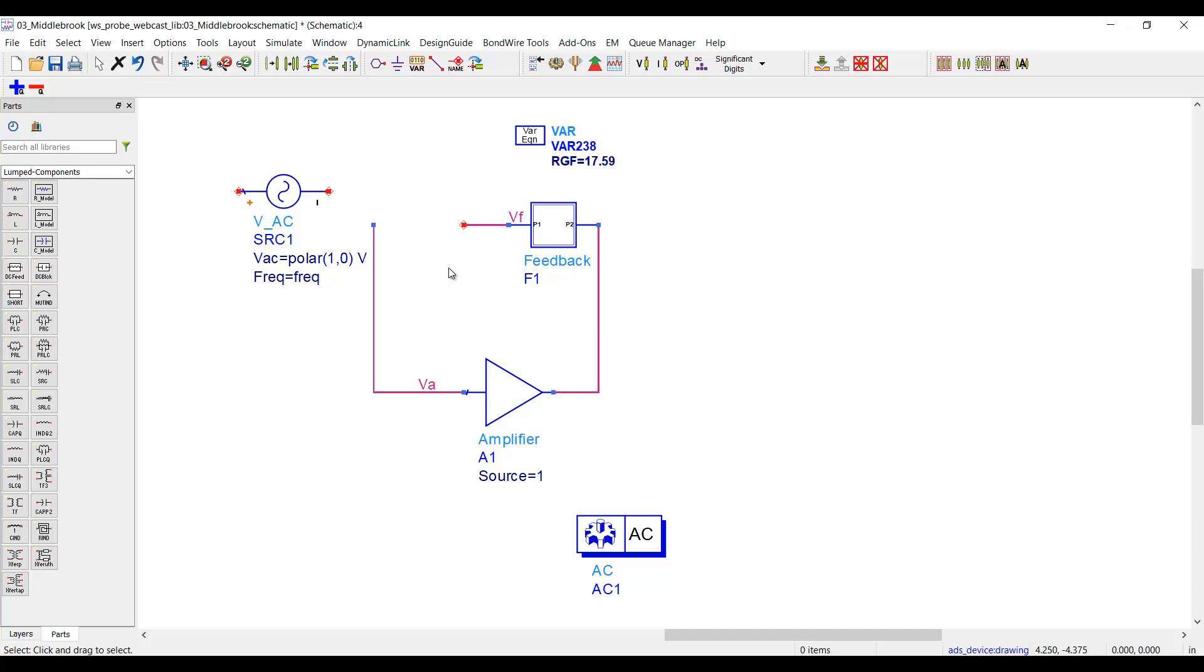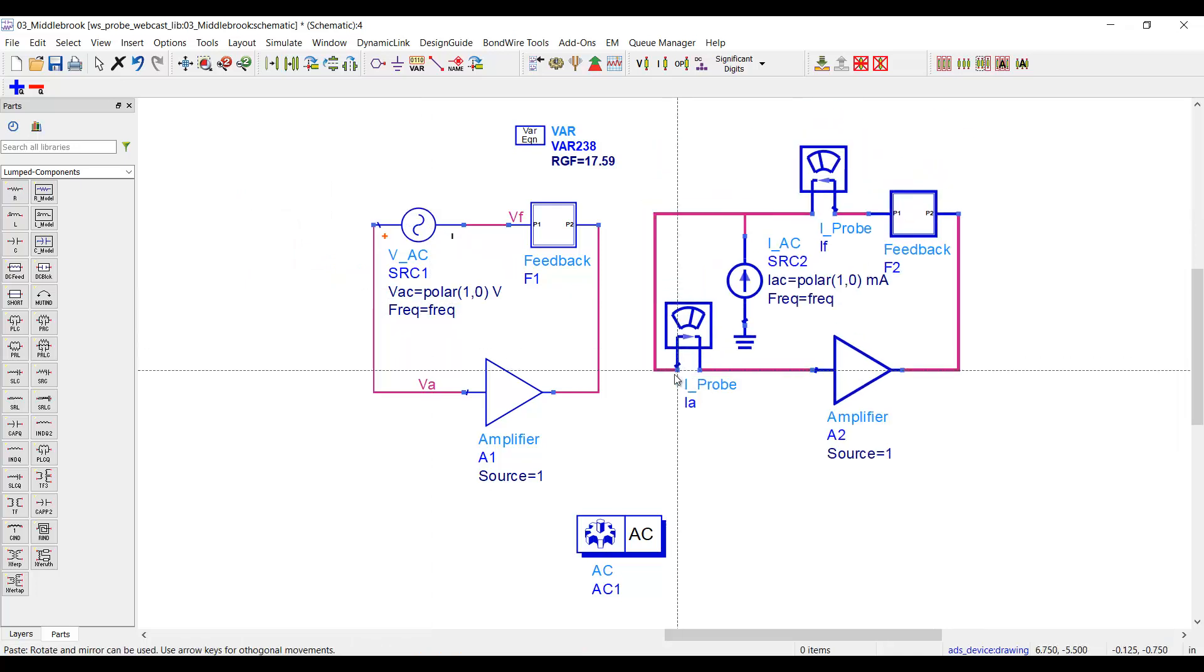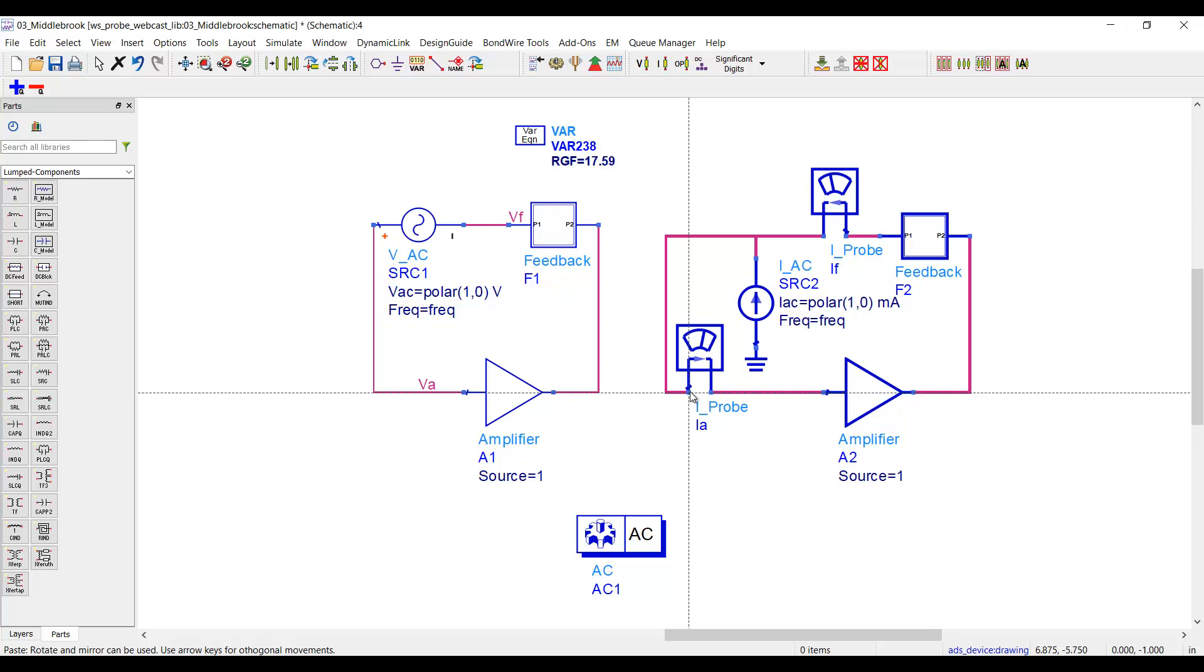Anyway, back to the show. In simulation, it's possible to emulate Middlebrook's original measurement technique by applying two test sources to the feedback loop, one voltage source and one current source. So that's what I've got here. I took the circuit, I put in a voltage source, and then I made a copy of the same circuit, and I put in a current source.